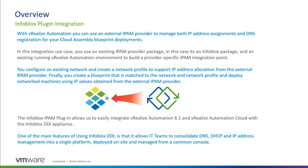The way this works is that we configure an existing network and create a network profile to support IP address allocation from the external IPAM provider. We then create a blueprint matched to the network and network profile, and deploy networked machines using IP values obtained from the external IPAM provider. The Infoblox IPAM plugin allows easy integration of vRealize Automation 8.1 and vRealize Automation Cloud with the Infoblox DDI appliance, which consolidates DNS, DHCP, and IP address management into a single platform.